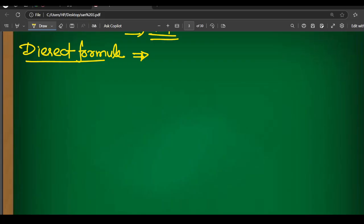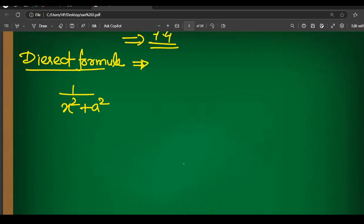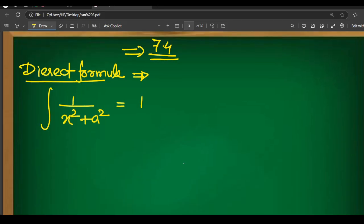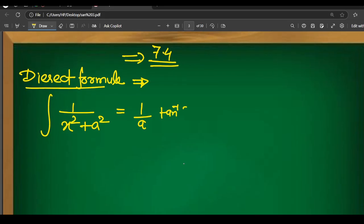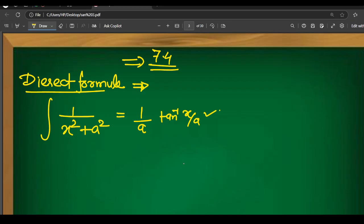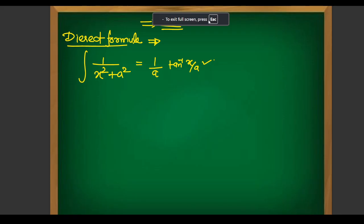Let's talk about formulas. First of all, the formula for ∫dx/(x²+a²): the direct formula is (1/a) · tan⁻¹(x/a). So the direct formula is 1/a · tan⁻¹(x/a). Memorize this formula directly.